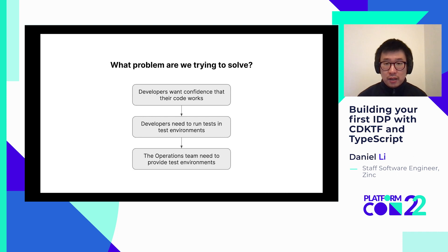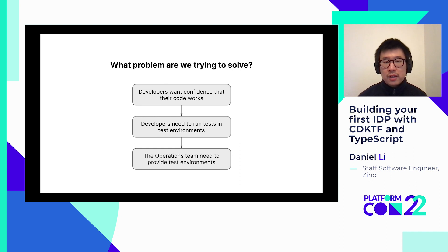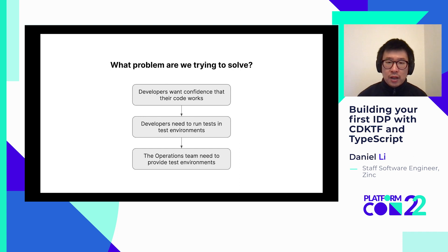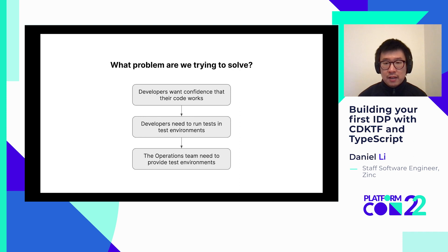Let's start with the question: what problem are we trying to solve? Fundamentally, the problem is that developers want to have confidence that their code works in production. This is usually achieved by running a set of tests — automated unit, integration, and end-to-end tests that test for known issues, and manual exploratory tests that test for unknown issues. But to carry out these tests, the operations team needs to provide developers with test environments, and providing these test environments is the problem that an IDP tries to solve.